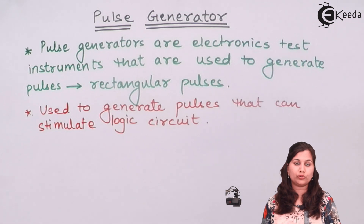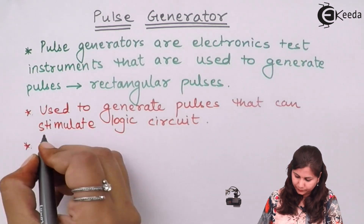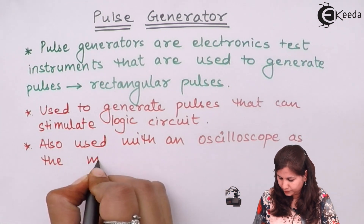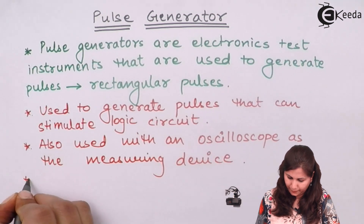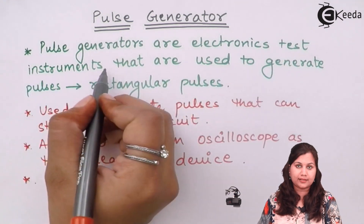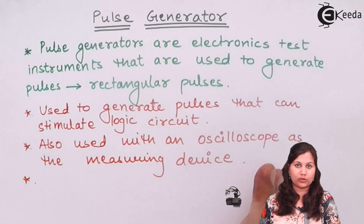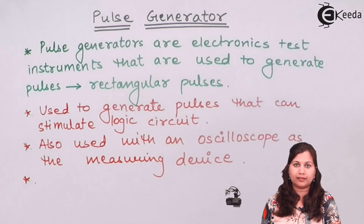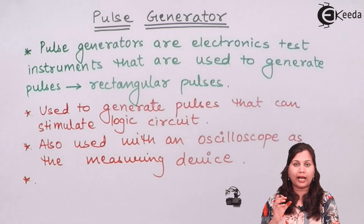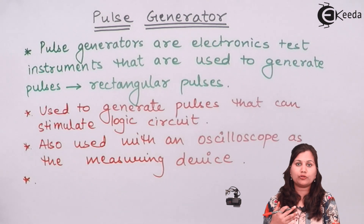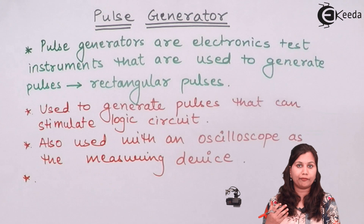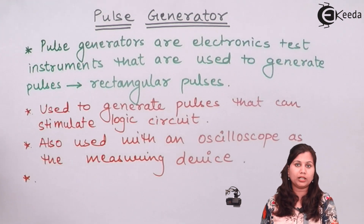These pulse generators are also used along with the oscilloscope — that is, cathode ray oscilloscopes — as a measuring device. When using the pulse generator as a test instrument, it will display the waveform either at the output or at some specific point in the circuit. If we want to analyze that waveform or pulse, it can be done with the help of the pulse generator.